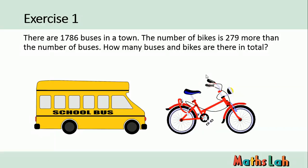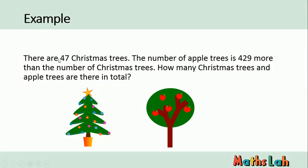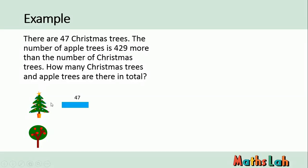Now let's proceed to the next example. There are 47 Christmas trees, and the number of apple trees is 429 more than the number of Christmas trees. How many Christmas trees and apple trees are there in total? We are also going to draw a diagram for the Christmas trees and apple trees. This is the 47 Christmas trees, and this orange bar represents the additional 429.